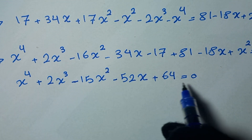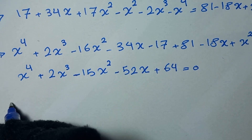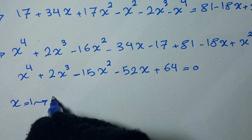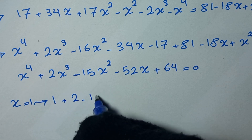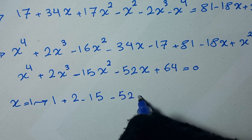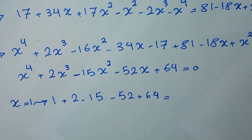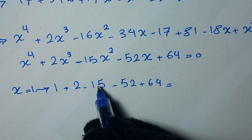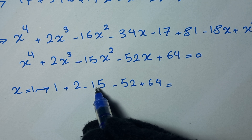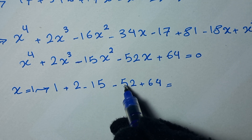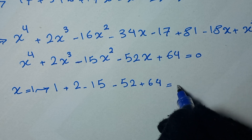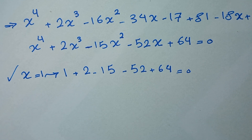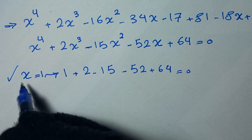In the next step, from this equation we can guess one of the answers. If we let x equal 1, it will be 1 plus 2 minus 15 minus 52 plus 64. If we calculate this: 1 plus 2 is 3, minus 15 is negative 12, minus 52 is negative 64, and plus 64 is zero. So x equals 1 is our first answer.